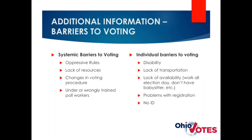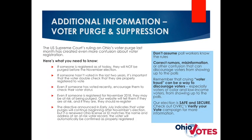There are two types of barriers to voting: systemic barriers, which include oppressive rules, under-trained poll workers, changes to voter rolls, and lack of resources; and individual barriers, which come up more frequently for low-income voters. The most common individual barriers are disability, lack of transportation, lack of availability, a problem with registration, and not having proper ID. Be aware and try to minimize all of those different barriers.